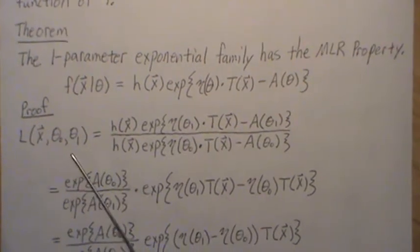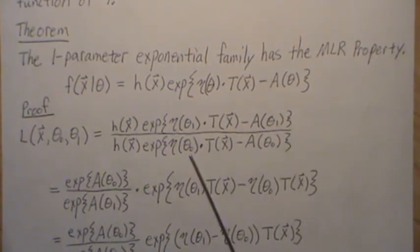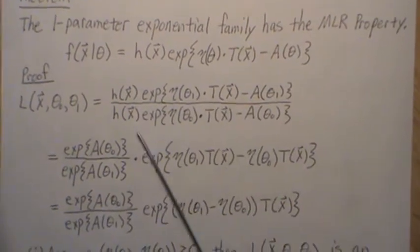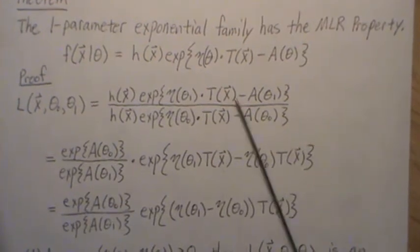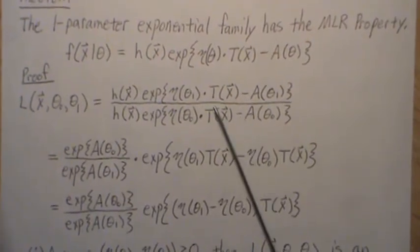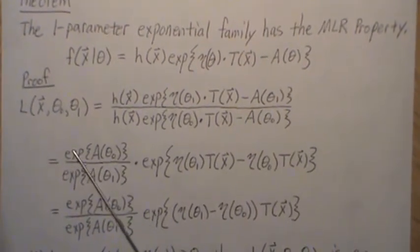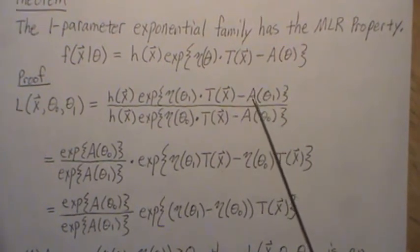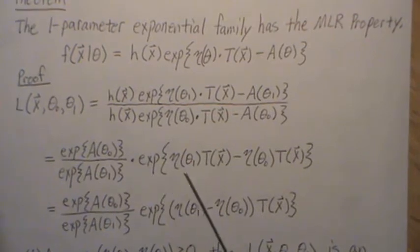The proof that the exponential family has the monotone likelihood ratio property goes as follows. We look at the likelihood ratio: we plug in theta_1 and theta_0 into the family form. The h terms cancel, and then taking the exponential terms up, we can break it into a product of exponentials — this one is positive, and this one, e to the minus the log-partition, comes down.